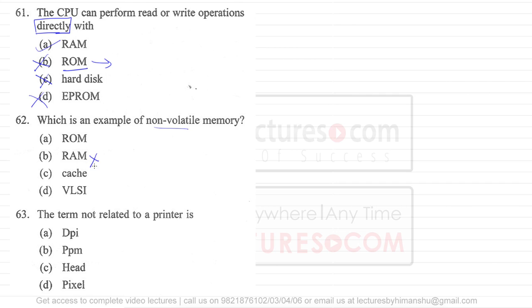But the RAM, cache memory or VLSI. Actually VLSI is not used to store data, it is not a memory. But RAM and cache is a memory. Now this RAM, random access memory and cache memory, whenever you turn off the computer or restart your computer they will be completely wiped off or all the data will be deleted.